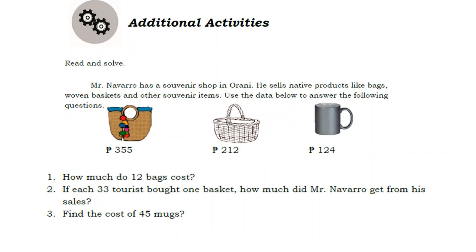Question 1: How much do 12 bags cost? Answer: 4,260 pesos. Question 2: If each of 33 tourists bought one basket, how much did Mr. Navarro get from his sales? Answer: 6,996 pesos. Question 3: Find the cost of 45 mugs. Answer: 5,580 pesos.